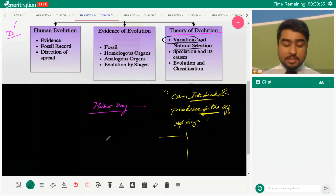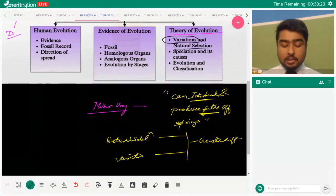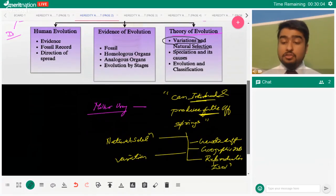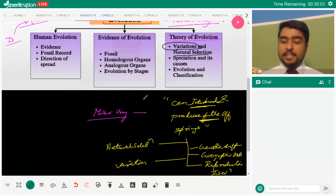Now speciation has certain forces or things that can cause speciation. That can be natural selection, that can be genetic drift, that can be variations also linked with natural selection, that can be reproductive isolation or geographical isolation also. Gene flow and drift - okay guys don't get confused between these two.